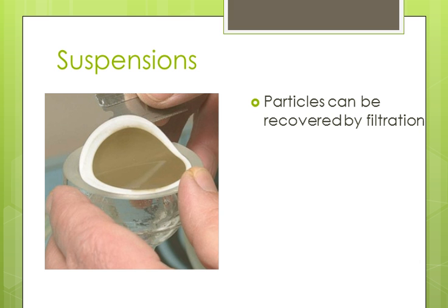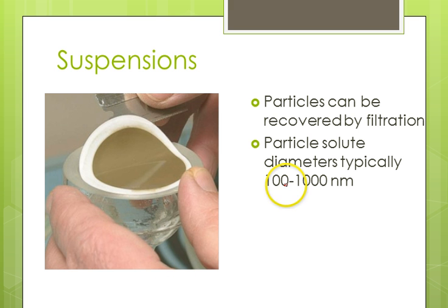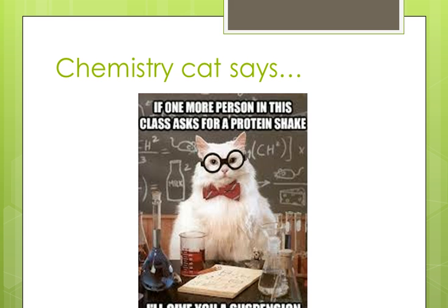The particles in a suspension are fairly large compared to the particles in a solution — large enough that you can actually recover them by filtration, as shown in the picture. We're usually talking particles that are 100 to 1,000 times larger in diameter than what you'd see in a solution. This is part of the reason why they're not staying evenly dispersed — they're going to just settle to the bottom. We're talking 100 to 1,000 nanometer particles on average in a suspension.